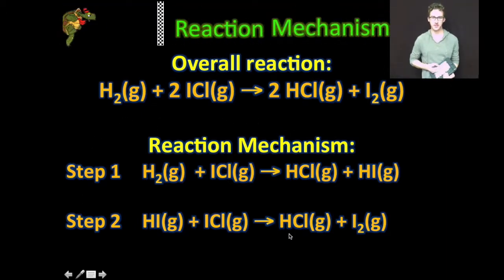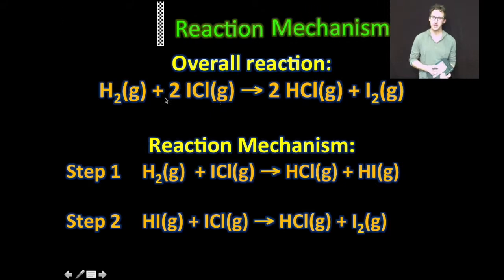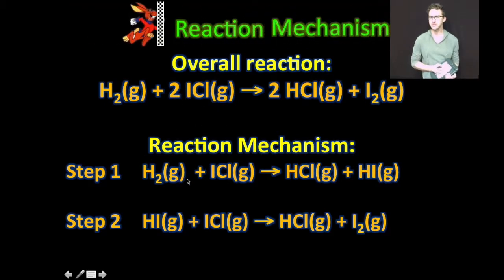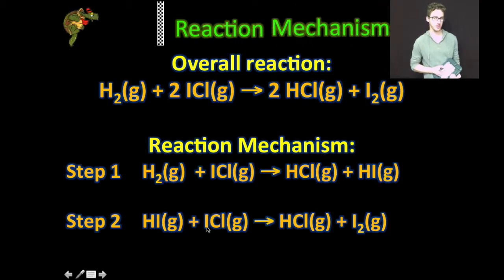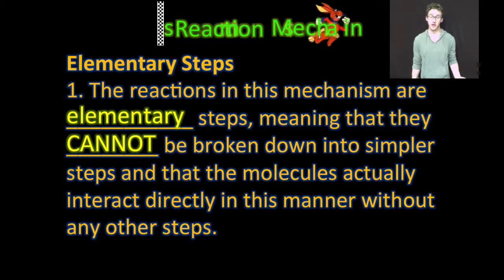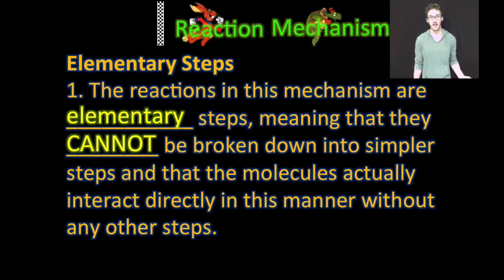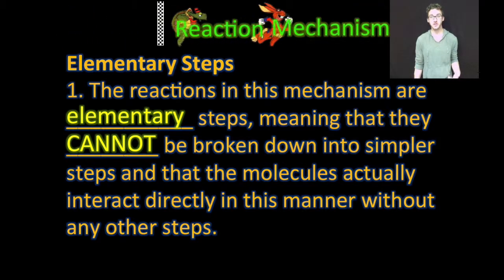As you take a look at this proposed reaction mechanism for this overall reaction, let's think about how this mechanism works. In the overall reaction, we've got one molecule of hydrogen reacting with two molecules of ICl. But in the reaction mechanism, a single molecule of hydrogen will first react with a single molecule of ICl, generating one molecule of HCl and one molecule of HI. That molecule of HI that was produced will then react with a second molecule of ICl, forming a second molecule of HCl and iodine gas. These reactions are considered elementary steps, meaning they cannot be broken down into simpler steps and the molecules actually interact directly in that manner.